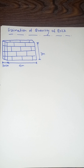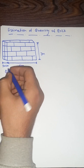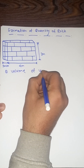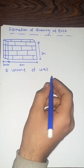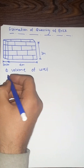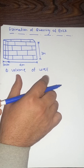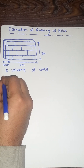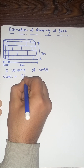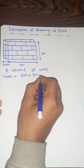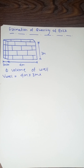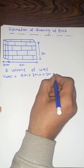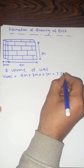For calculating the quantity of the brick, the first step is to find the volume of the wall. For finding the volume, we have to multiply the length, height, and thickness. So the volume of the wall becomes 4 meters × 3 meters × 0.3 meters, which equals 3.6 cubic meters.